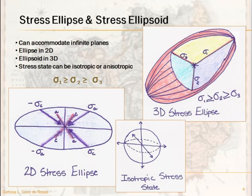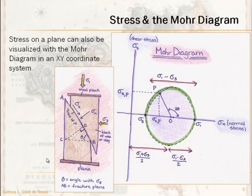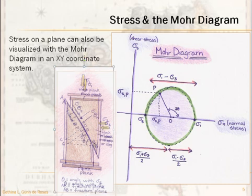This is not the only way to picture stress. There's another famous way — the Mohr circle or Mohr diagram — which visualizes stress in an XY coordinate system. Imagine an experiment: we take a block of wax or clay and apply pressure — that's our sigma 1, the greatest stress — pushing down onto a wood plank. We expect a fracture to develop, and we take that plane of fracture and ask: what is the magnitude of the stress acting on this plane?